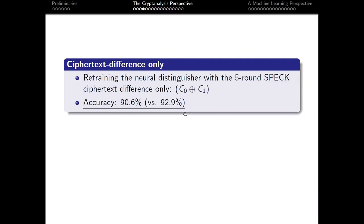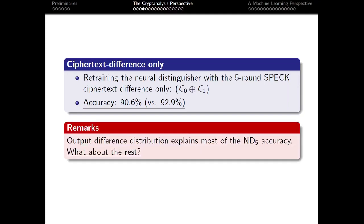The next experiment ensured a fair comparison between the pure differential distinguisher and the neural distinguisher. Since a DDT only assesses the difference and nothing else, the neural distinguisher should also only assess the difference. We retrained the neural distinguisher with just the difference instead of the entire ciphertext pair. The accuracy fell by a few percentages, meaning that while the bulk of the information may be explained by the output difference distribution, some must be explained in another manner.